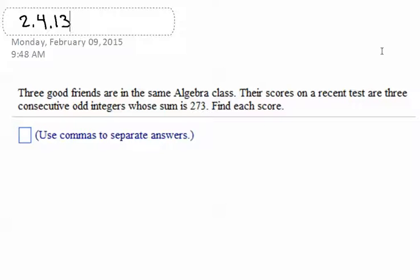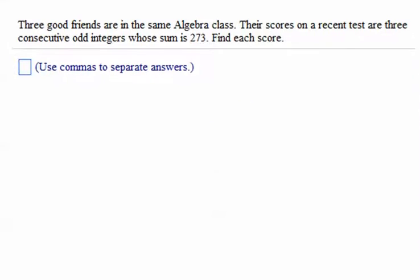So here are a few of these problems from section 2.4 for more practice. Three good friends are in the same algebra class. Their scores on a recent test are three consecutive odd integers whose sum is 273. Find each score.